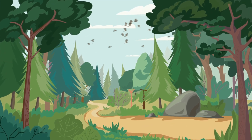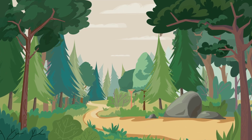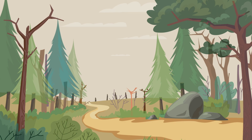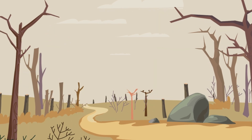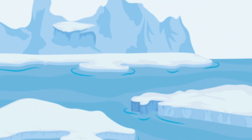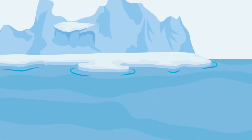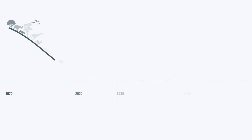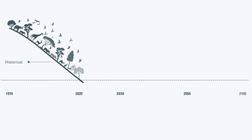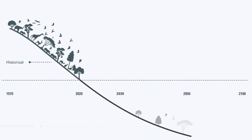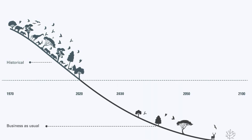More and more, we are seeing the global effects of land loss, climate change, pollution and invasive species. Extinction rates are accelerating and ecosystems are changing faster than ever.